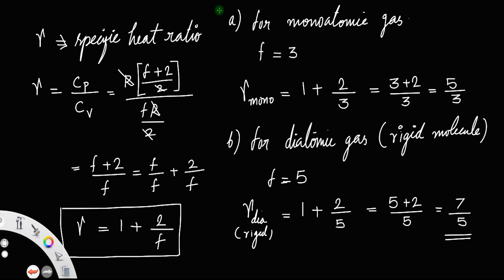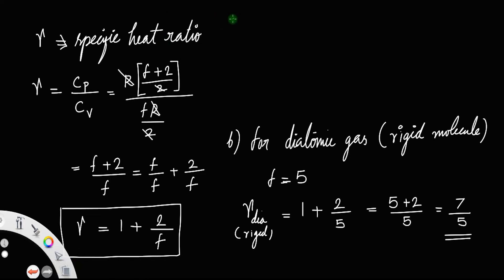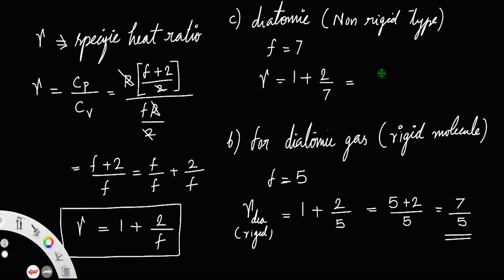There is another kind: the non-rigid diatomic molecule. For a non-rigid diatomic molecule, f = 7. We are not discussing here the reason why f = 5 for rigid and f = 7 for non-rigid diatomic molecules. Applying the formula, gamma_diatomic(non-rigid) = 1 + 2/7 = (7+2)/7 = 9/7.